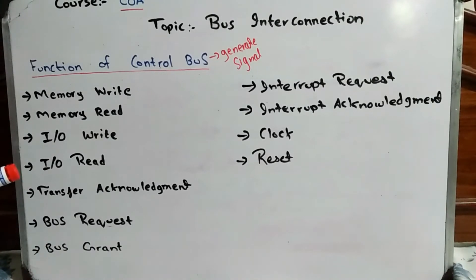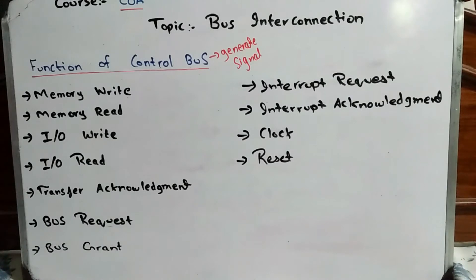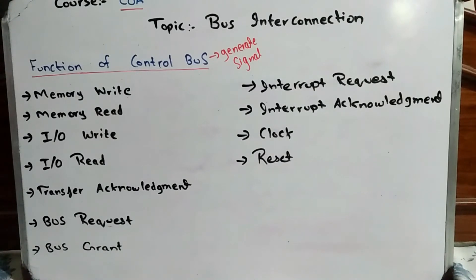The fourth function is I/O read. If you want to read data from an input or output device, you will assign the address of that device to the address bus. Then the data bus will travel to the CPU, and the CPU will perform further working.